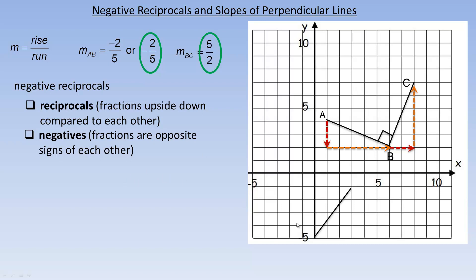Let's take a look at another example. We have line segment DE. To go from D to E, we go across 3 and up 4, so DE has a slope of 4 thirds — 4 is the rise and 3 is the run.